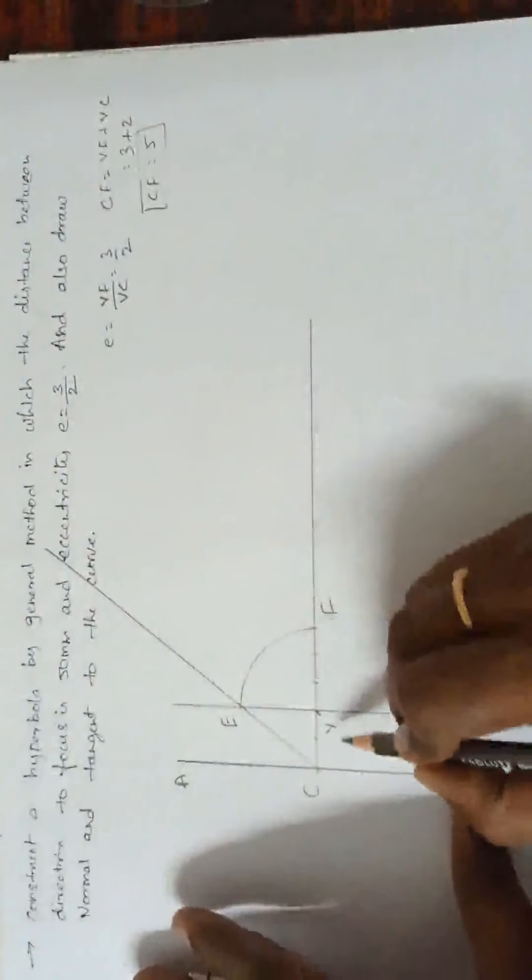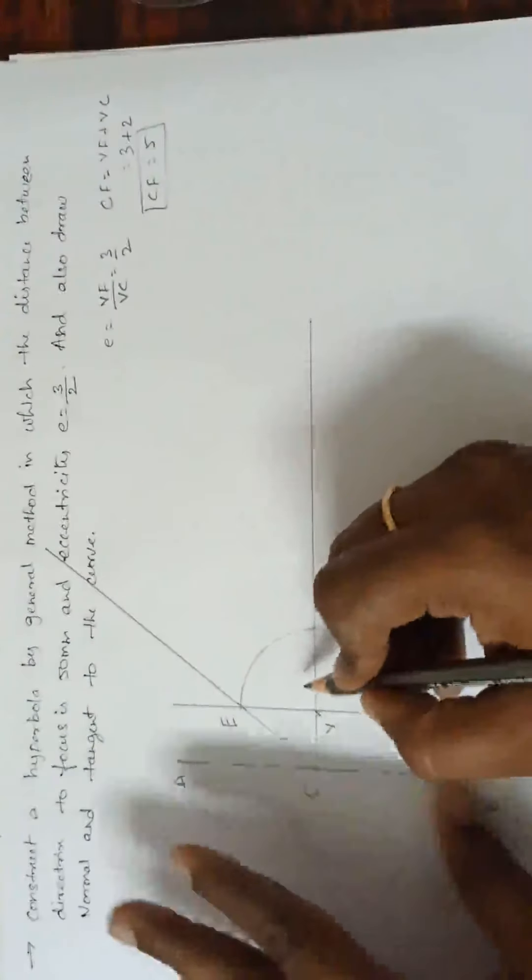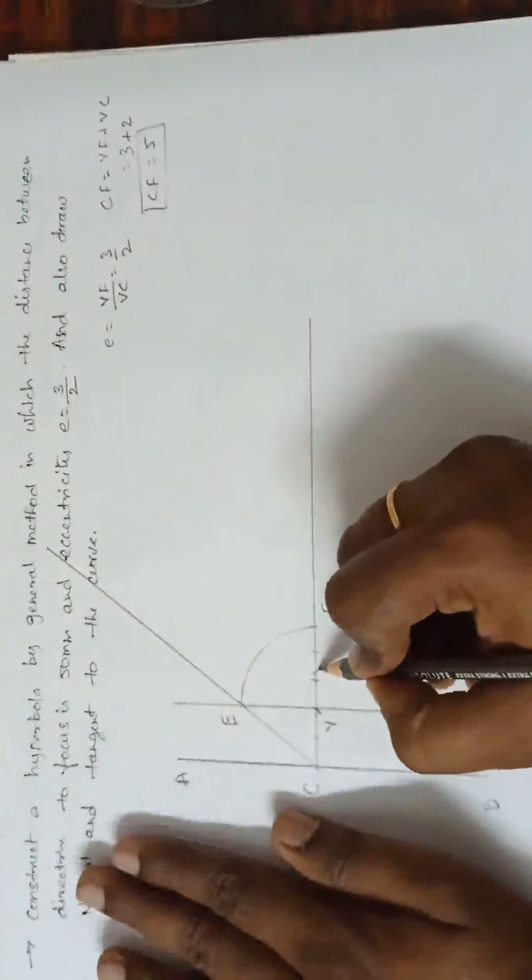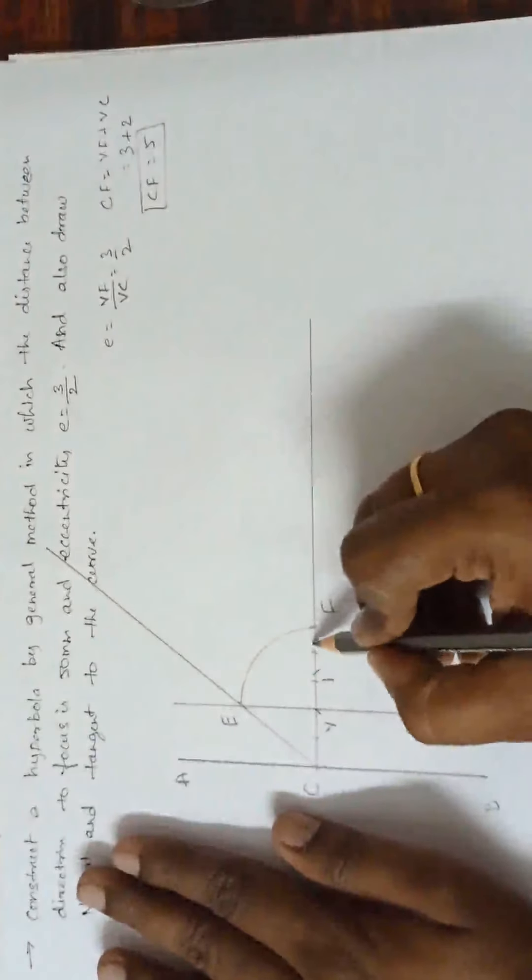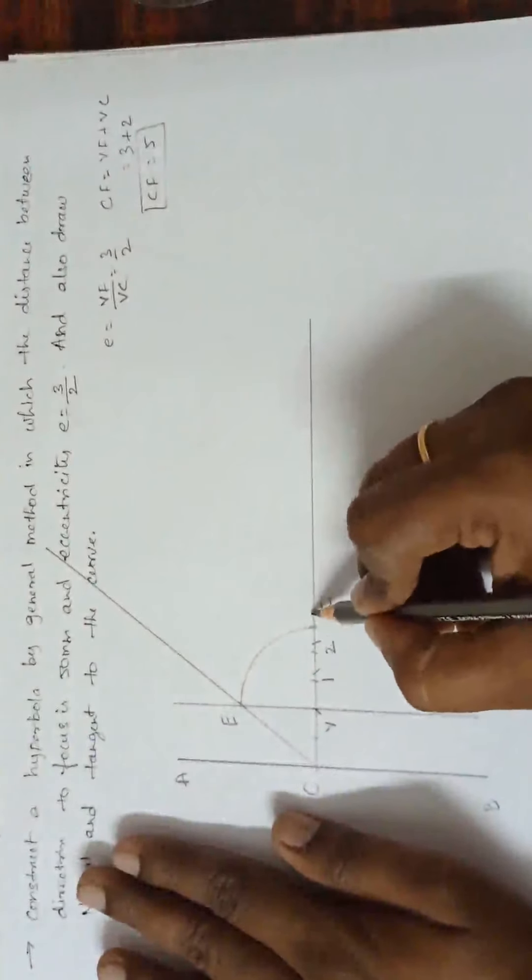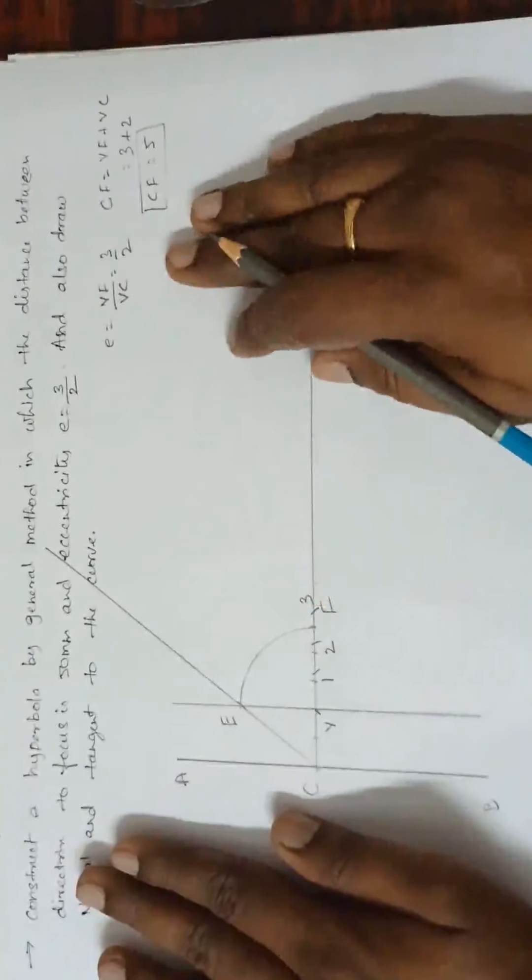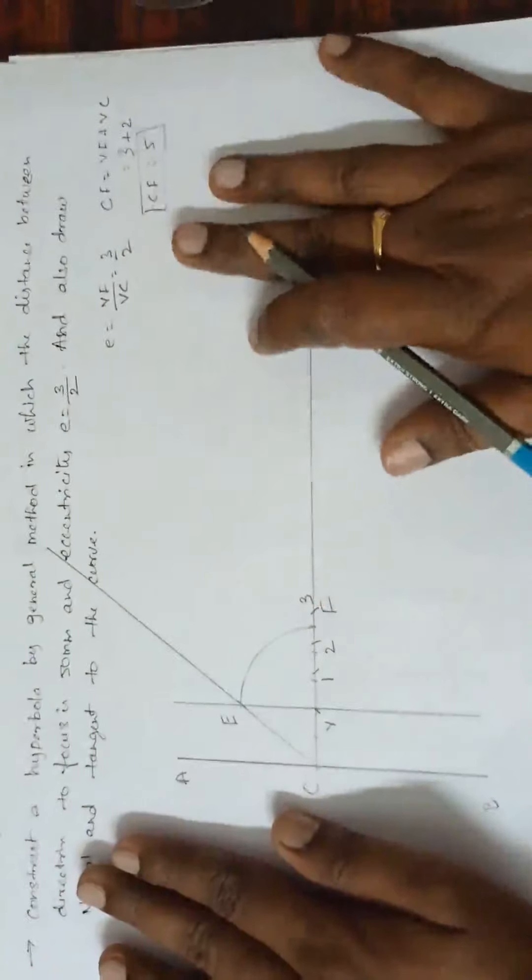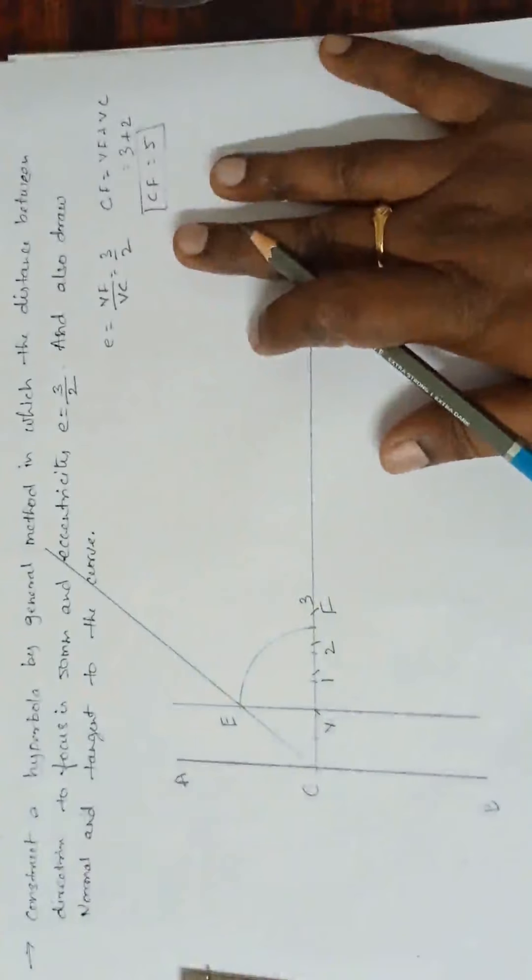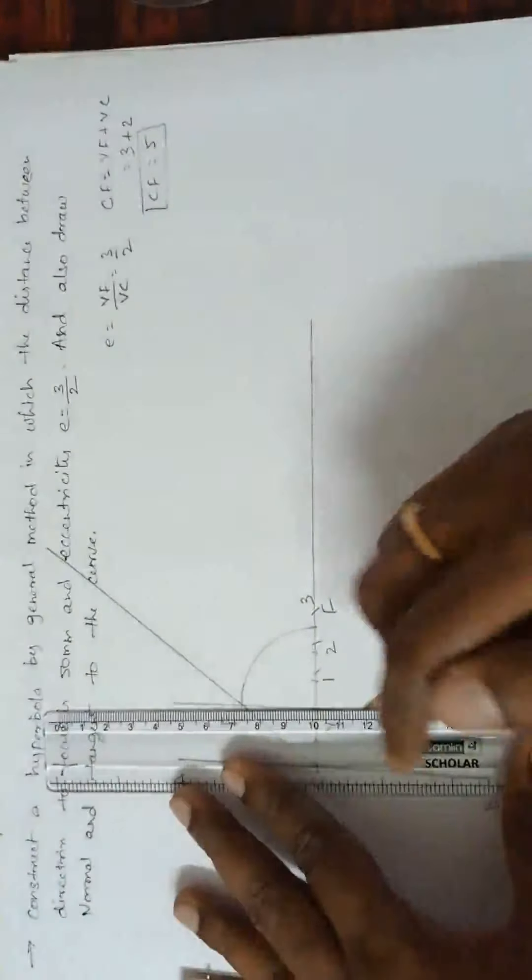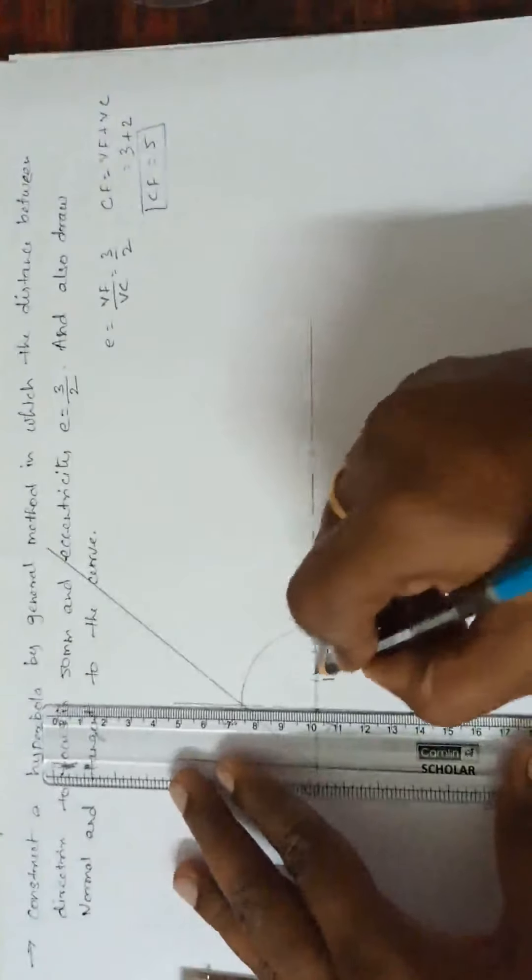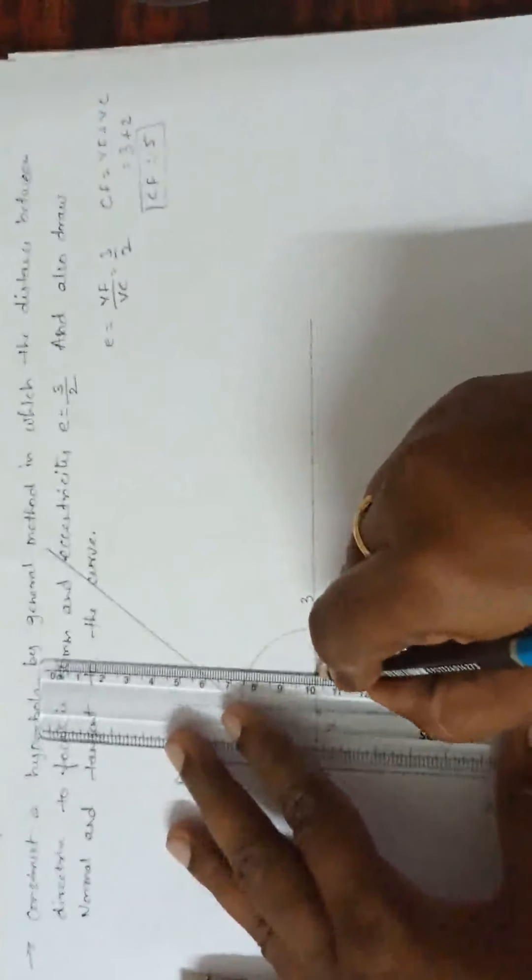Now, what I am doing? Mark any point towards the right of V vertex. Just mark any point 1. This is 2 and this is some 3. I am assuming any number of points, need not to be equal.